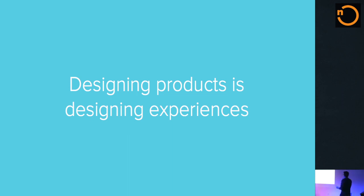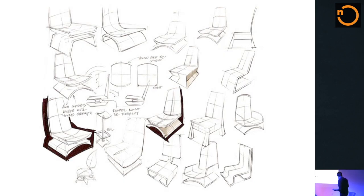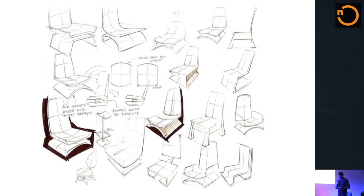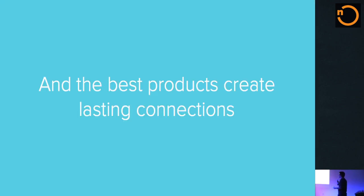If you consider designing products like chairs — chairs are very functional, very utilitarian. You need a surface on which your butt can rest, a back so you can lean without falling over. But if you really design something well, all the best products create lasting connections, like chairs.